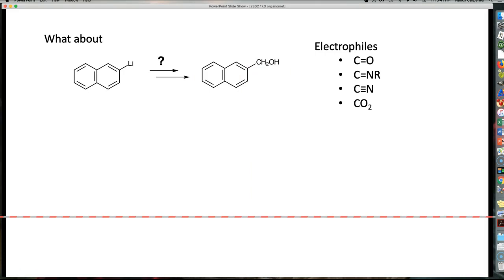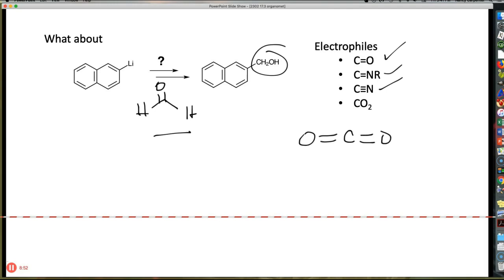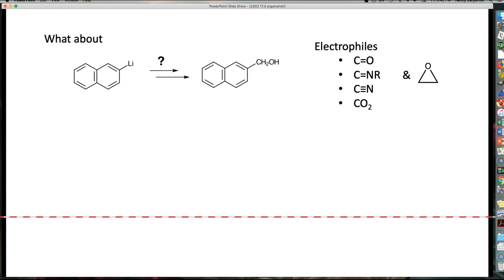So we can add these crazy Grignards and organolithiums to a boatload of electrophiles. If I add my Grignard or organolithium to formaldehyde, obviously I get a primary alcohol. But I can do aldehydes and ketones. I can do imines. I can do nitriles. My goodness, I can even add Grignards to CO2. And that gives me exactly what you'd expect if you think mechanism: a carboxylate, which I can then protonate to get the carboxylic acid. So this is a very, very, very powerful synthetic tool. You have actually seen the Grignards react previous to this because we have been adding Grignards to epoxides, for example.